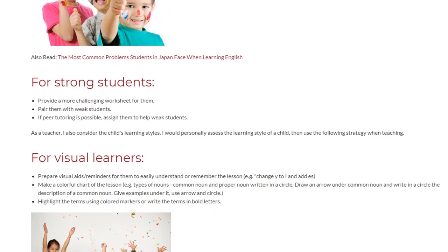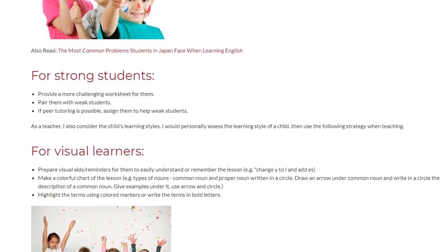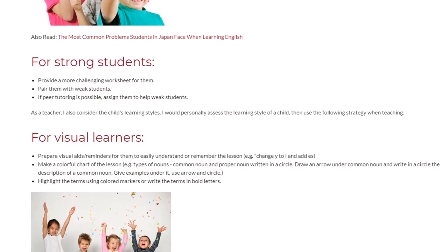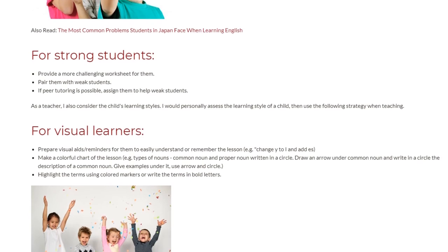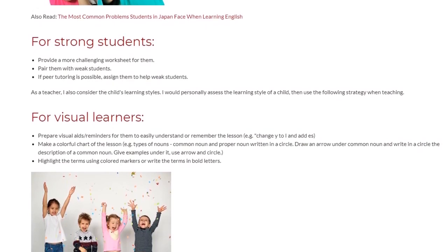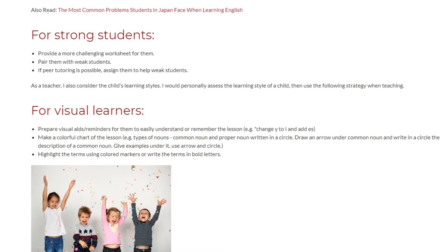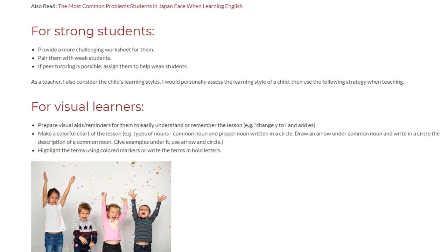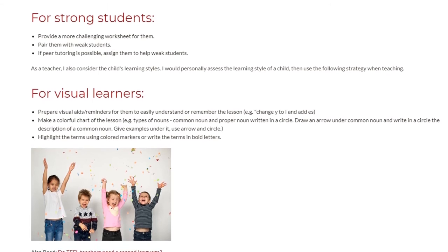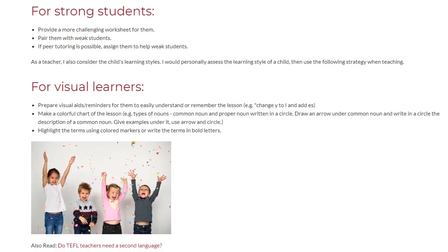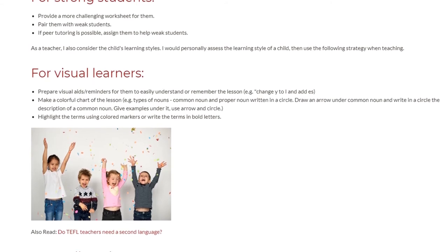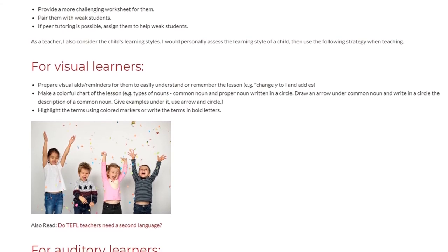For visual learners: prepare visual aids or reminders for them to easily understand or remember the lesson — for example, 'change white to I and add S.' Make a colorful chart of the lesson, for example types of nouns: common noun and proper noun written in a circle. Draw an arrow under common noun and write in a circle the description of a common noun. Give examples under it using arrows and circles.